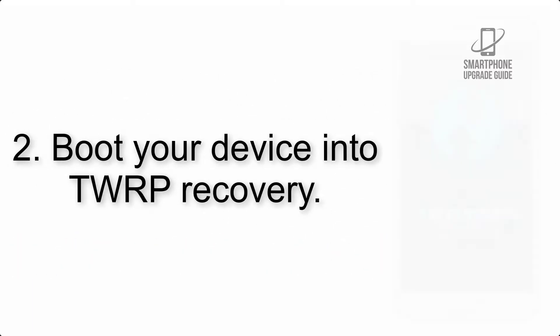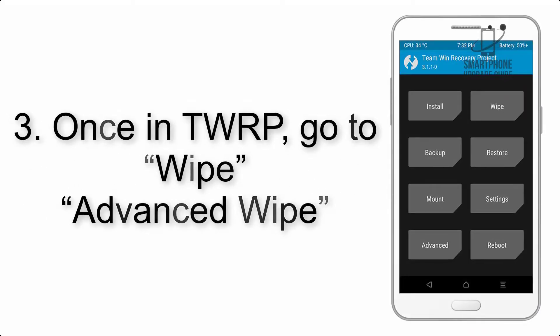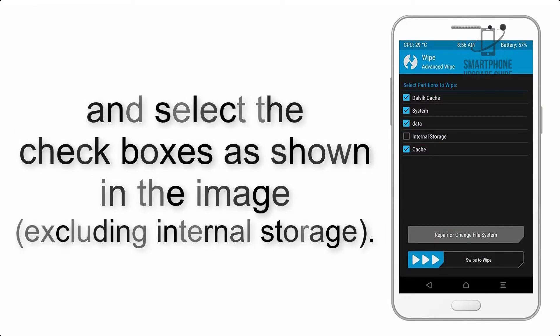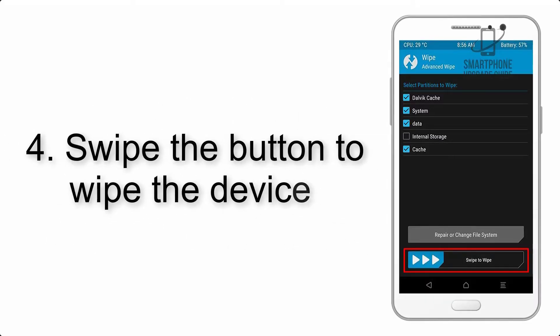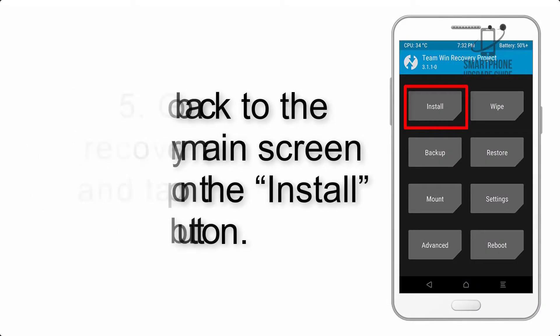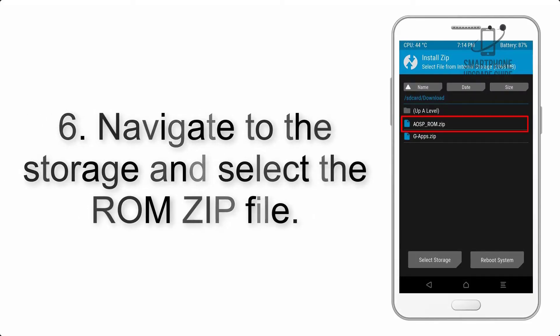Step 2: Boot your device into TWRP recovery. Once in TWRP, click on Wipe, then Advanced Wipe, and select the checkboxes as shown in the image, excluding internal storage. Step 4: Swipe the button to wipe the device. Step 5: Go back to the recovery main screen and tap on the Install button.